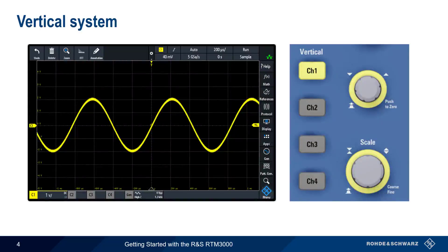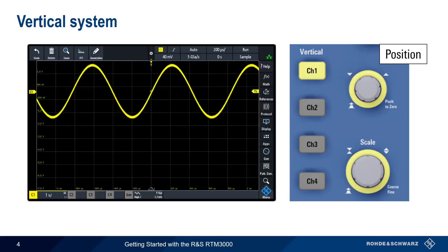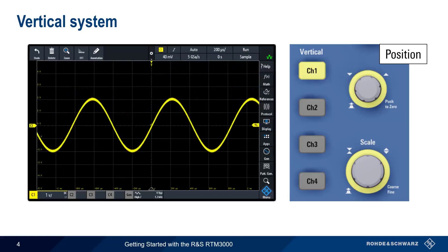The vertical system controls consist of the Position knob and Volts Per Division or Vertical Scale knob. The Position knob can be used to move the waveform up and down, and pushing the knob recenters the waveform. Volts Per Division is used to scale the waveform vertically. The current value of Volts Per Division is shown at the bottom and can of course also be read directly off the vertical axis.